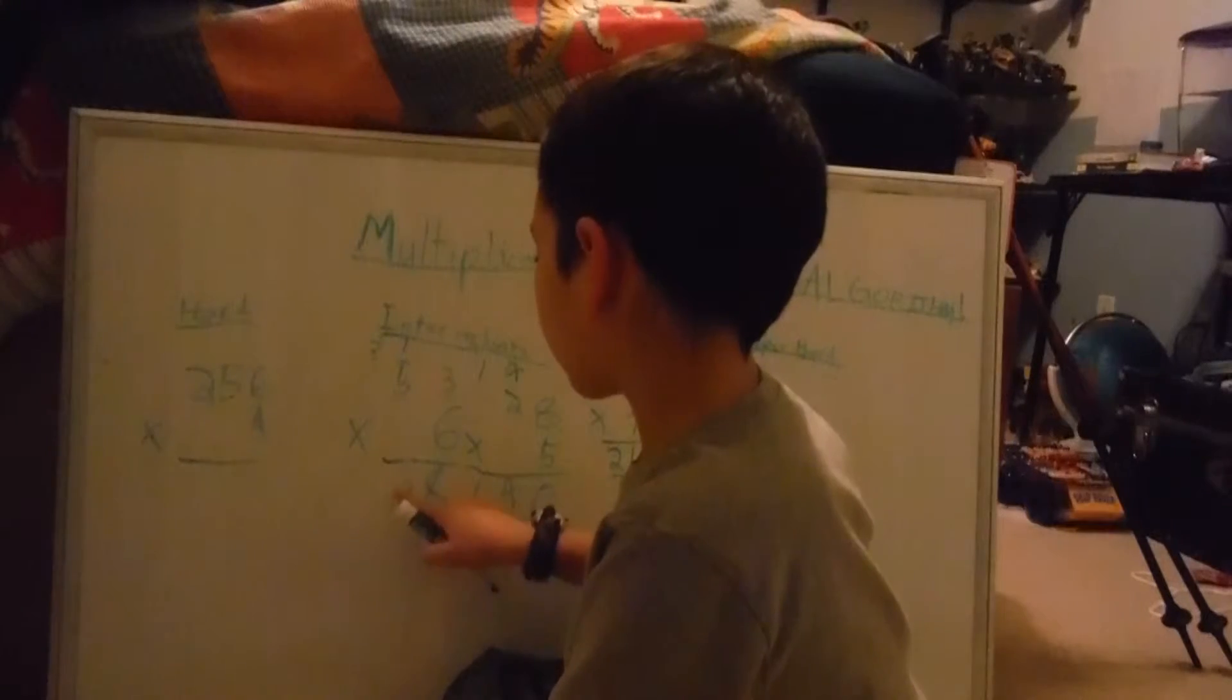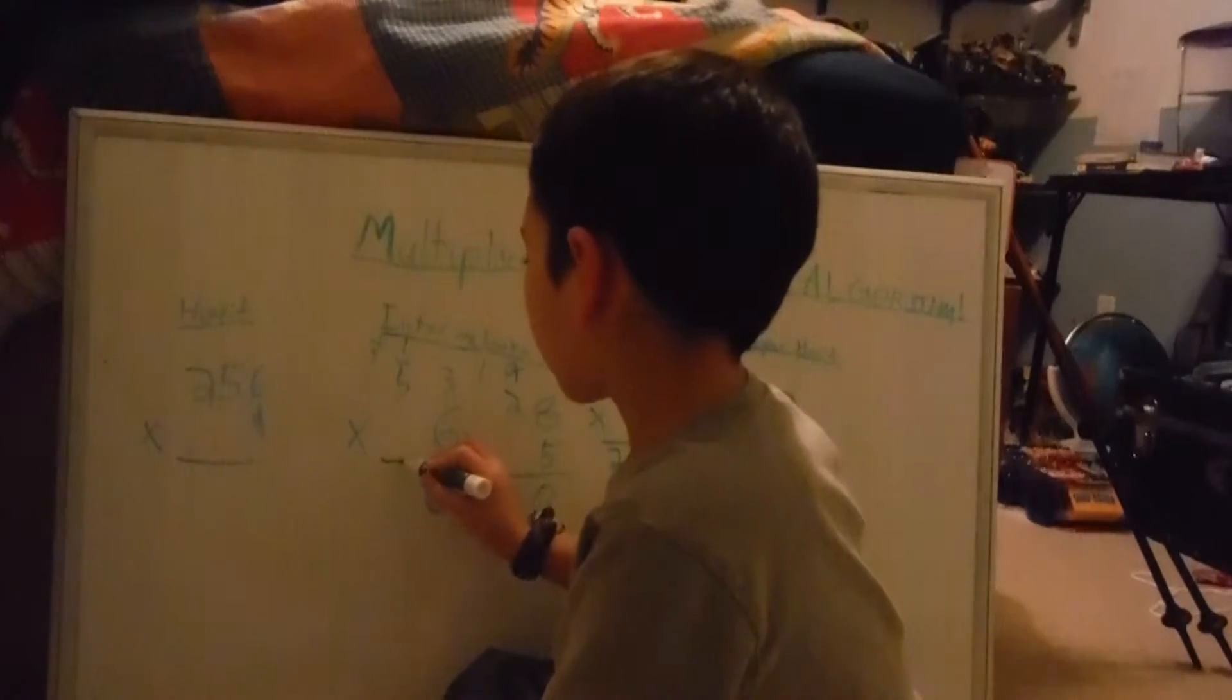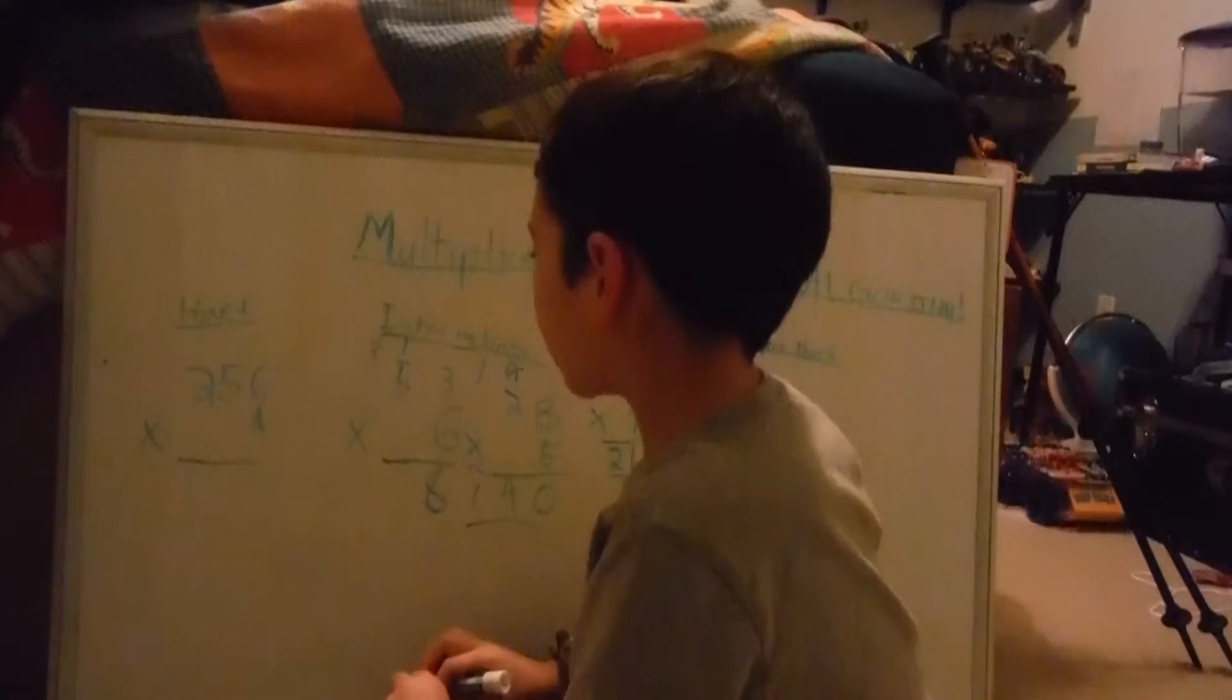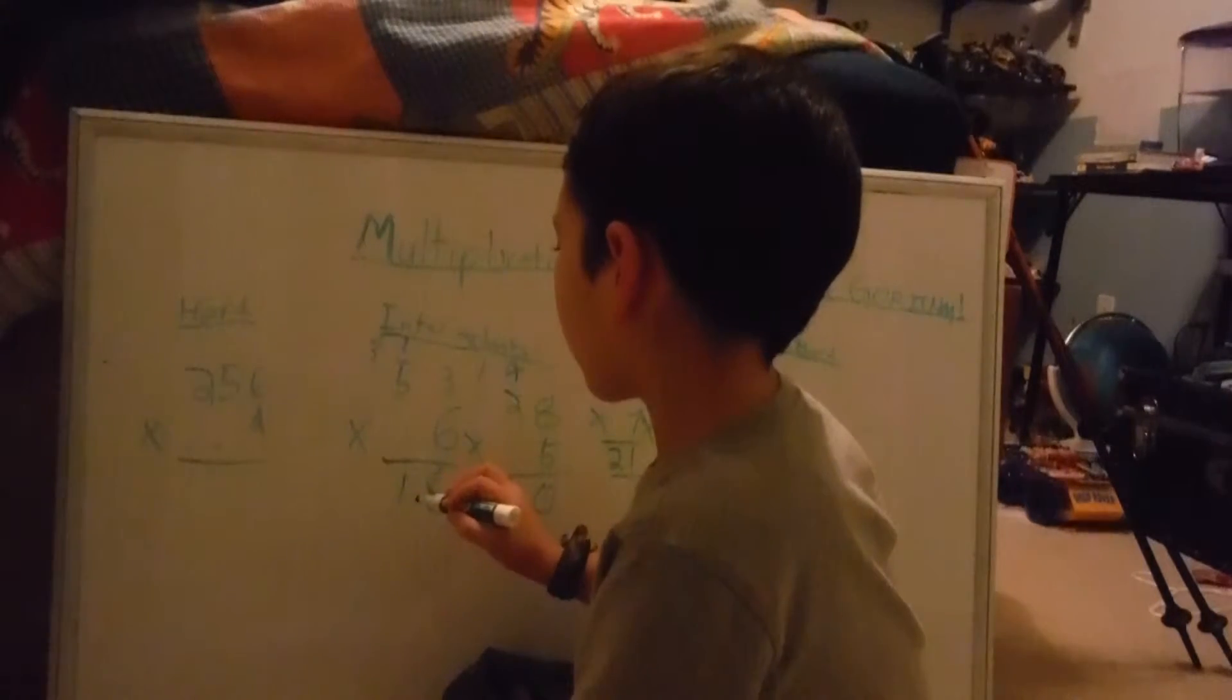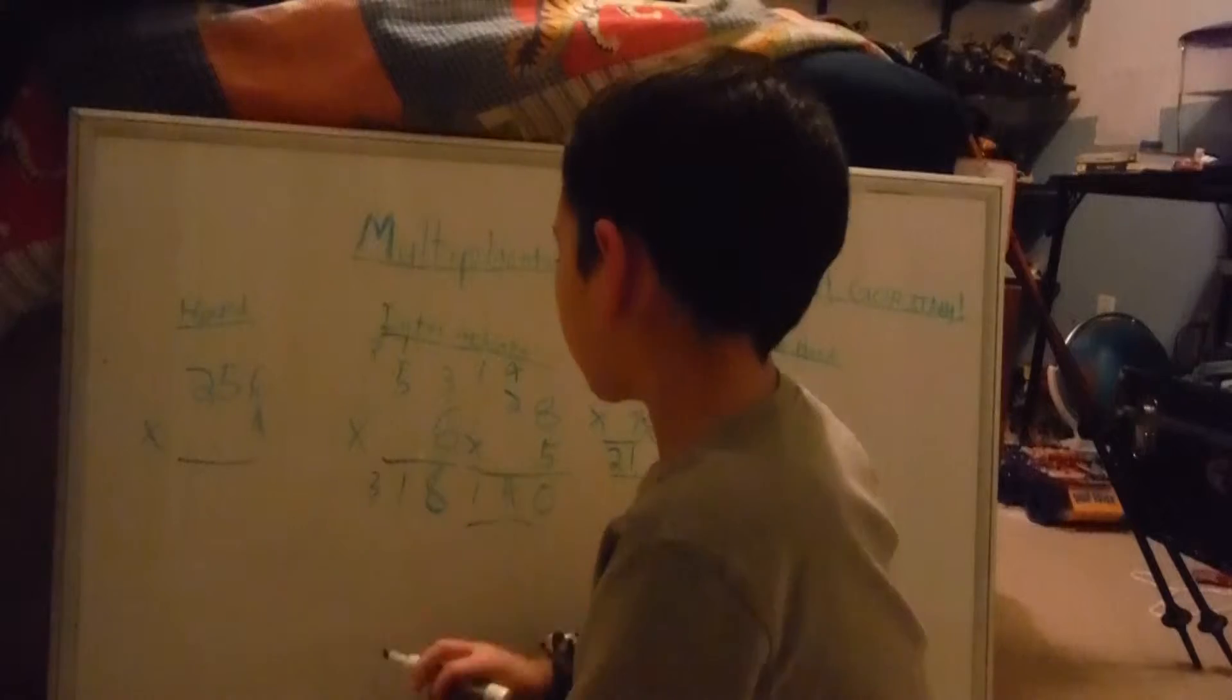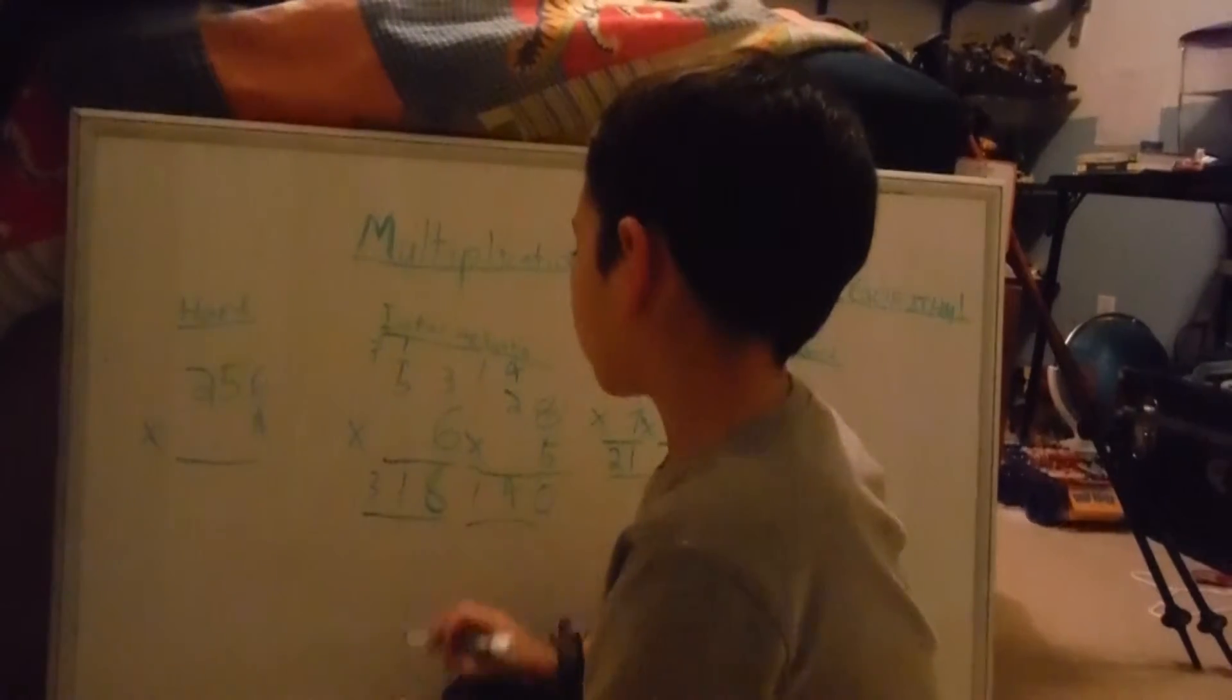Then you, oh wait, I forgot. And then with 30 you add 1 and so that 1 goes down there and then the 3 here. So 318.